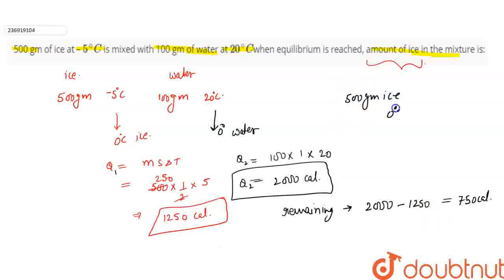Now 500 gram ice is at 0 degree Celsius and 100 gram water is at 0 degree Celsius. And this can still give 750 calories. It can give 750 calories to this. So this will take 750 calories and some mass will convert to 0 degree water.